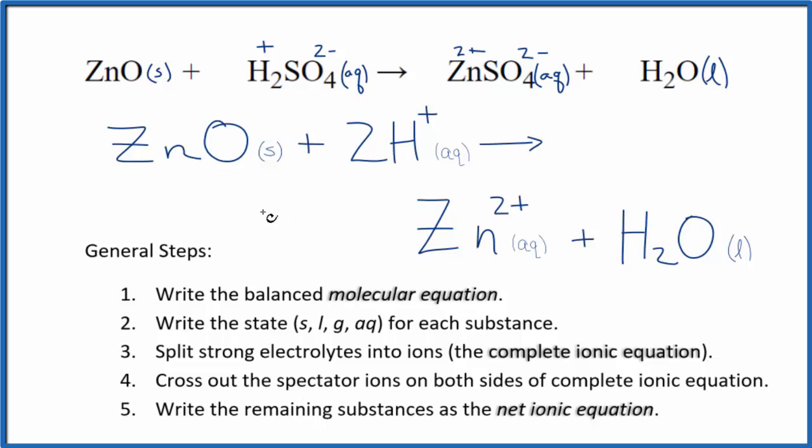You'll note that the charge is the same on both sides. We have 2 times 1 plus, that's 2 plus. Then on the products, we have a 2 plus here. The atoms, if you count those up, they're the same as well.